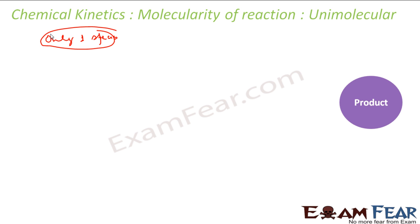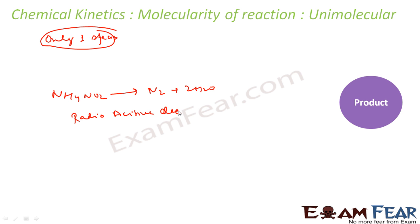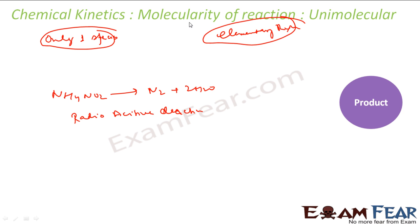Examples of unimolecular reactions include the decomposition of ammonium nitrite (NH4NO2 → N2 + 2H2O) and radioactive decay. Please note: these are all elementary reactions, not complex reactions. The term 'molecularity' is applicable only for elementary reactions.